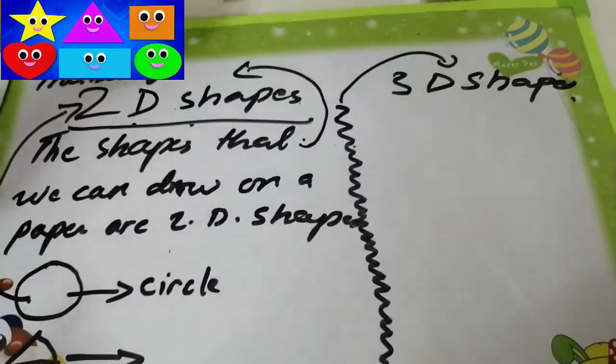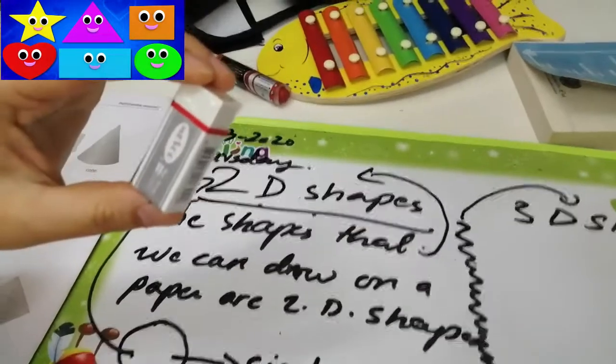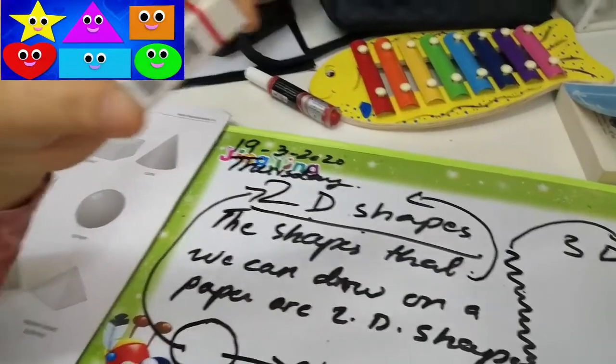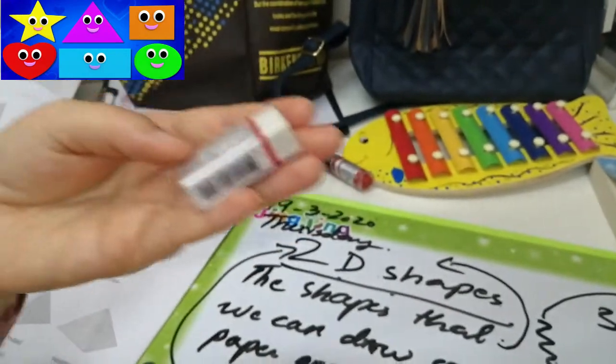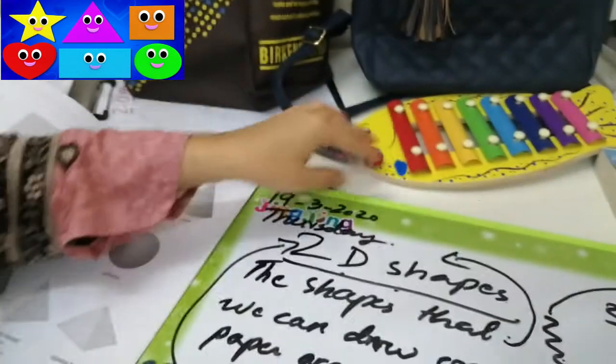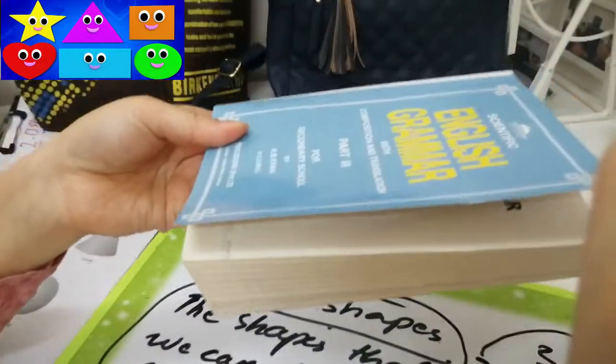So students, you can see this is an eraser. This is included in 3D shapes. We can hold it in our hand. We can hold this shape in our hand. This is the book. This is a 3D shape. We can hold this book in our hand.